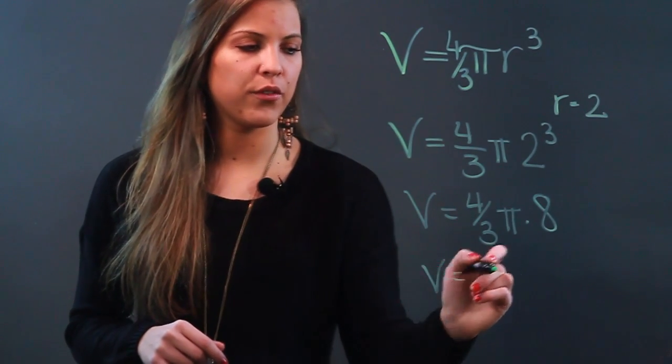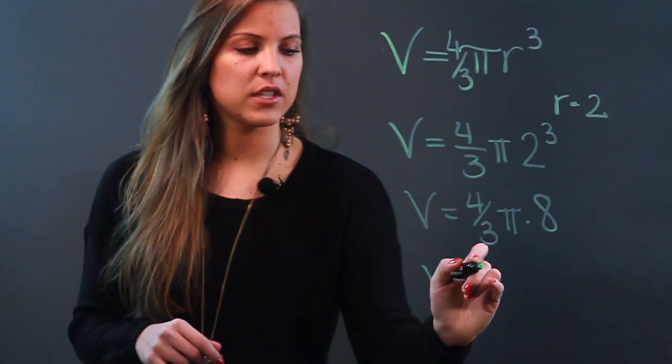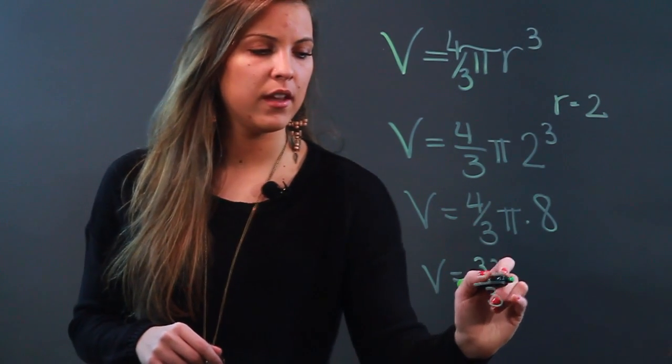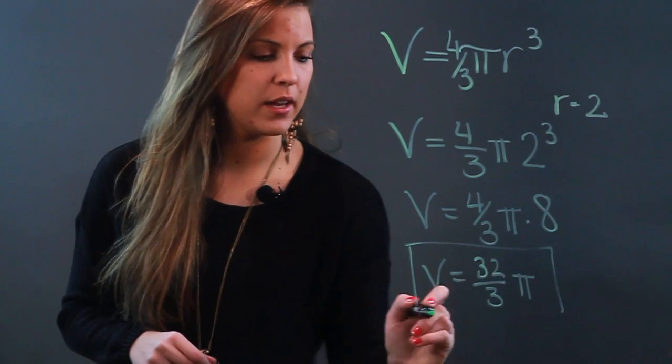We can simplify a little further now. I'm going to multiply 4/3 times 8, so that's 4 times 8 is 32 over 3, and I'm just going to bring over my pi. I can actually leave it right in that form.